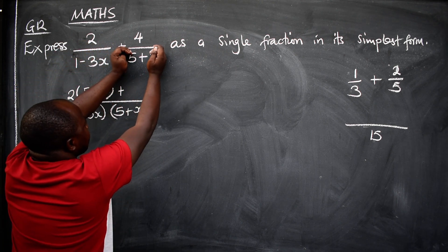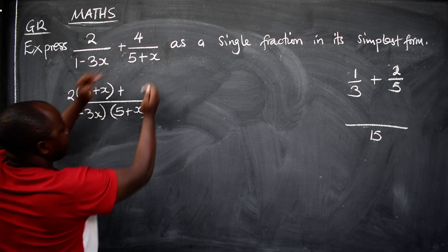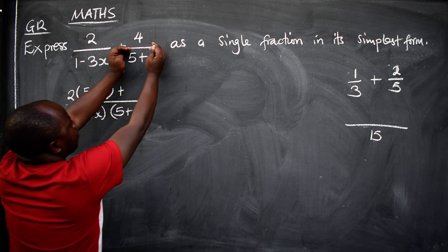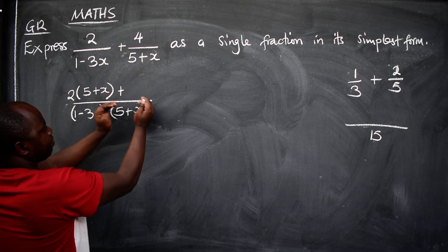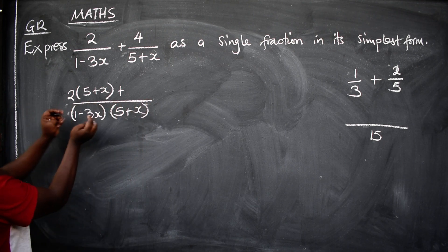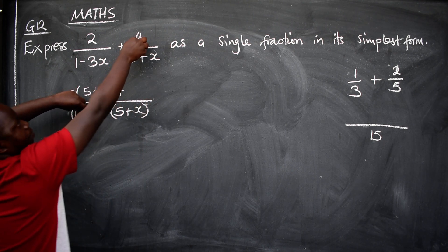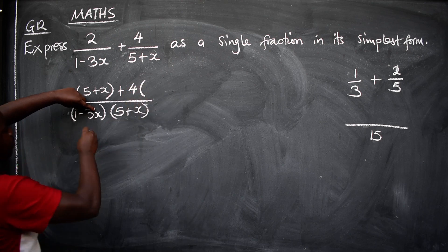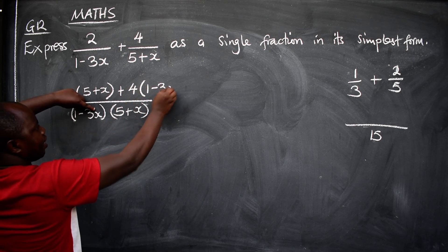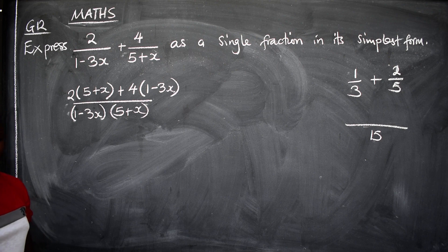Again, this 5 plus x into this, it means you are going to cancel the 5 plus x, 5 plus x. You remain with this. Then whatever is going to remain, multiply with the 4. So it will be 4 multiplied by 1 minus 3x. That is what you are going to do.